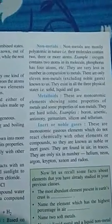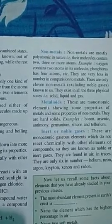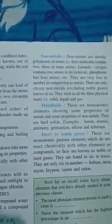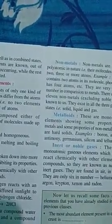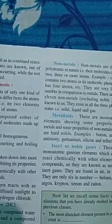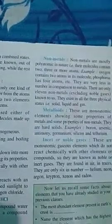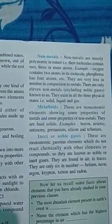Inert gases are also called noble gases or rare gases. They are monoatomic, just like metals. All molecules of inert gases are made up of only one atom. They do not react with any other elements and are very rarely found. There are only six inert gases: helium, neon, argon, krypton, xenon, and radon.